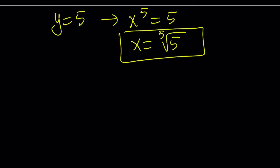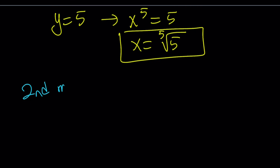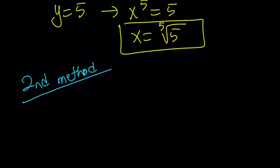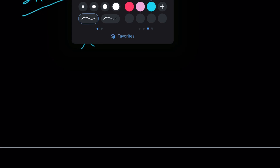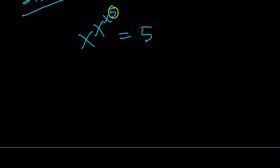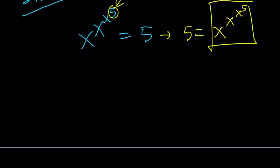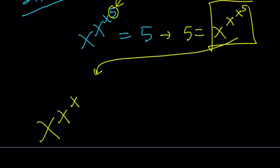Let me rewrite the problem: x to the power x to the power x to the fifth equals 5. For the second method, I'm going to do something unusual but very helpful for these kinds of expressions. Notice the 5 here, and we know the whole expression equals 5. So I can say that 5 equals x to the power x to the power x to the fifth. Since 5 equals that, I can replace this 5 with that expression.